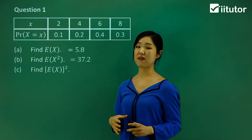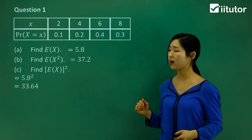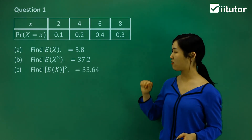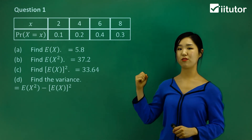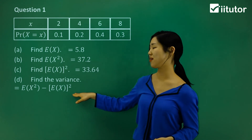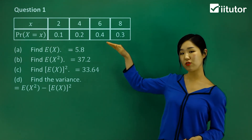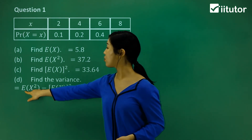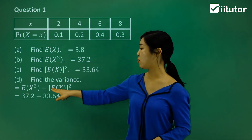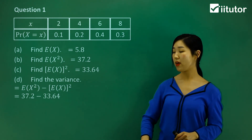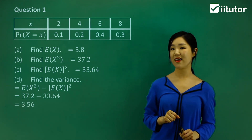Part C asks us to calculate (E[X])² — the expected value of X, the whole thing squared. The expected value of X was calculated in part A as 5.8, so we just square 5.8 to get 33.64. Now we can finally calculate the variance. Variance equals E[X²] minus (E[X])², so that's 37.2 minus 33.64, which gives a variance of 3.56.